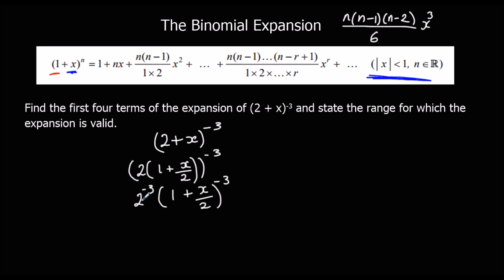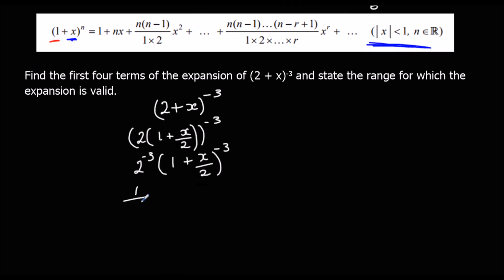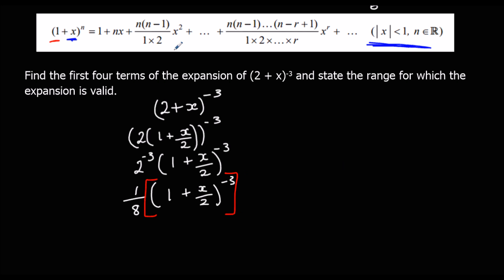Now we've got 2^(−3) on the outside. We can change that to 1/8. So we just leave 1/8 on the outside and (1 + x/2)^(−3) as our bracket — that's what we're going to expand. We're going to ignore the 1/8 and expand that bracket for the first four terms.